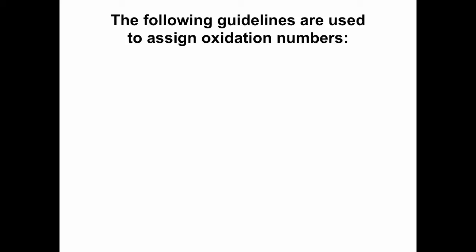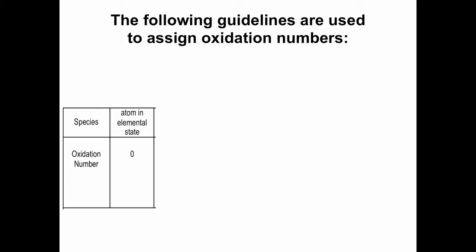Here are the guidelines for assigning oxidation numbers. First, an atom in its elemental state has an oxidation number of zero. Remember, oxidation number is essentially the charge on the substance — even if it's a pretend charge by treating it as ionic. For example, carbon in elemental state is zero, and even if it's diatomic, like H₂, each atom has an oxidation number of zero.